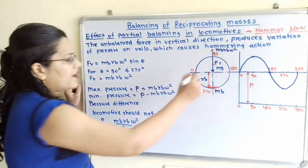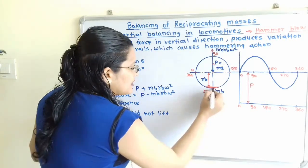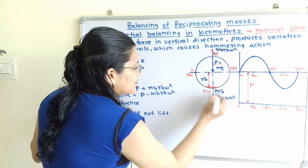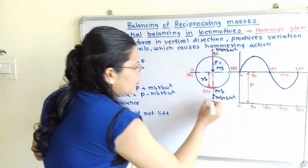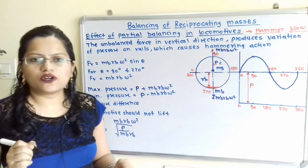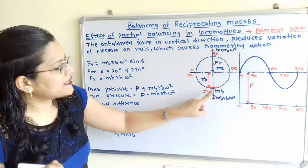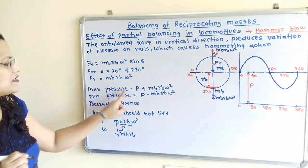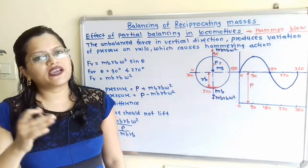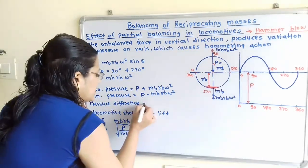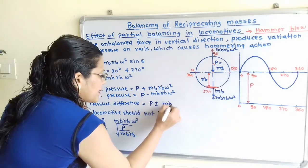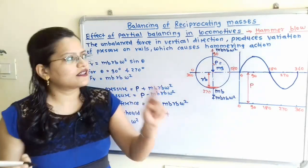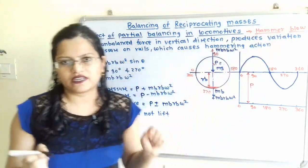When Mb is at 270°, the vertical component MbRb·ω² acts in the downward direction, so we take a positive sign. The total pressure on rails becomes P_max = P + MbRb·ω². Therefore, the variation in pressure is P ± MbRb·ω². Because of this variation in pressure on rails, the hammer blow effect takes place.